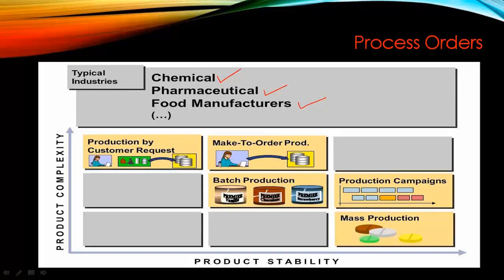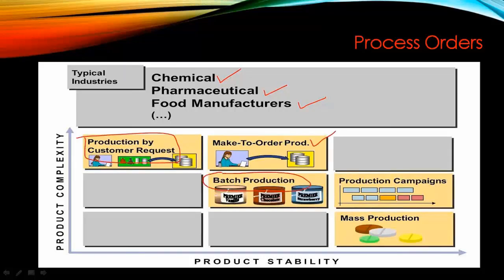With the Process Order, you have different types. You can create a Production by Customer Request, you can do a Make-to-Order Production, you can also do a Batch Production — we will talk about Batch Production later on — and you can do Mass Production and Campaigns.